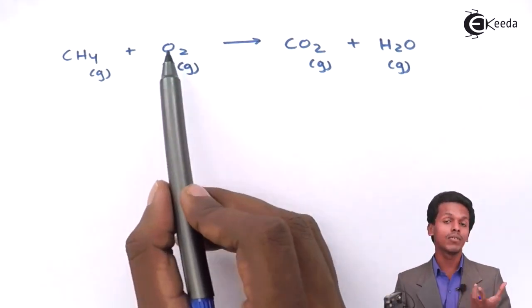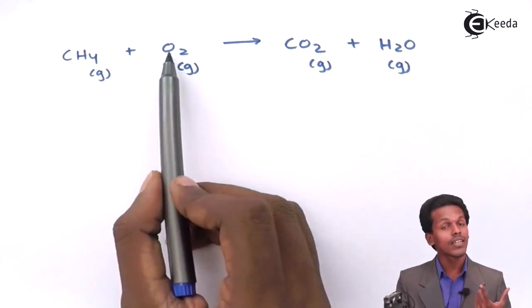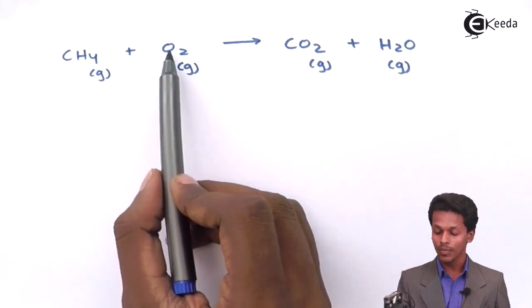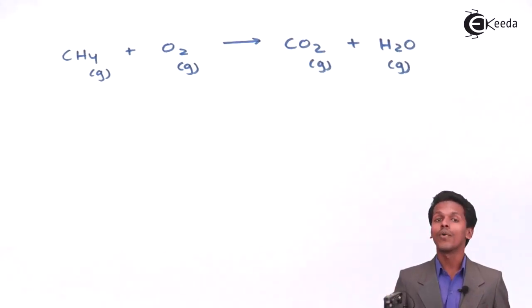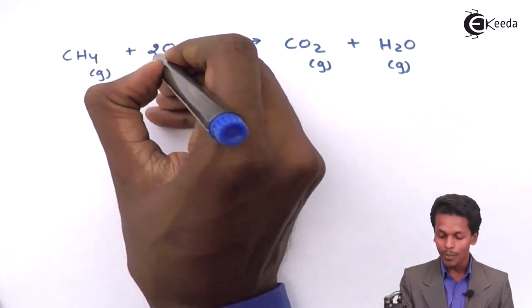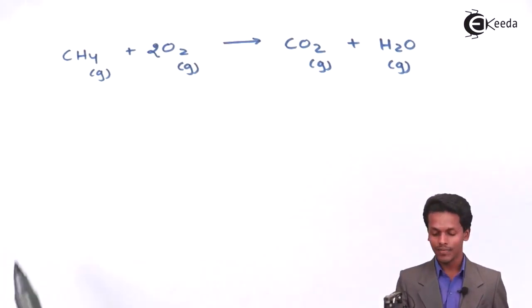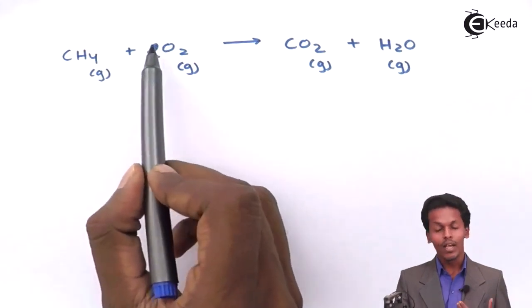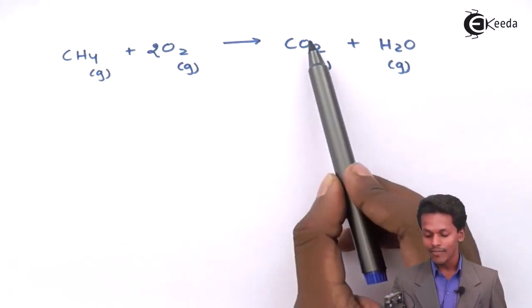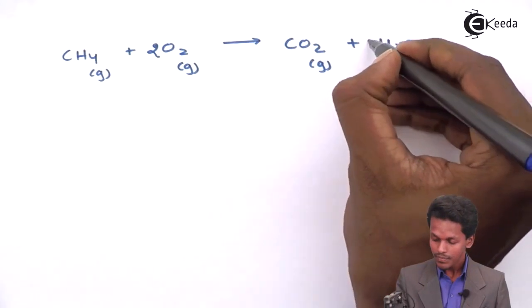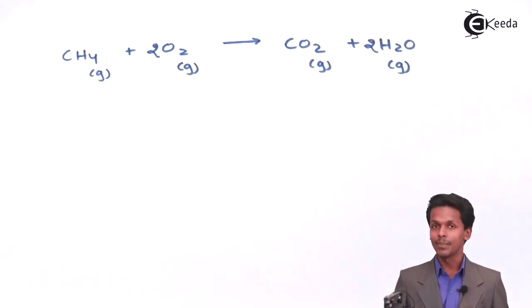But oxygen which is being used as a reactant, now in this case is one mole of oxygen molecule. But I could see that there are three atoms of oxygen in the product side. So therefore, what I am going to do is I am going to balance it. And now what we have, we have four atoms of oxygen on the reactant side as well as we have now four atoms of oxygen on the right hand side.